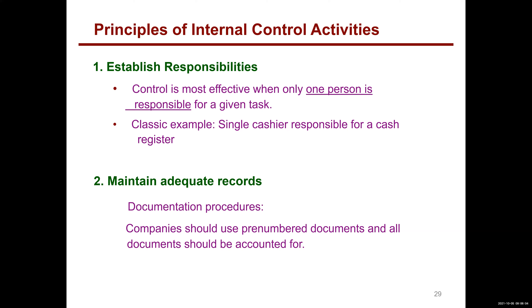Can you imagine if you had more than one cashier on a register? Let's say two cashiers. Well, now money's missing — who did it, cashier A or cashier B? You wouldn't know. So established responsibilities means one person responsible for a given task.